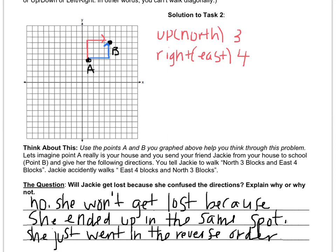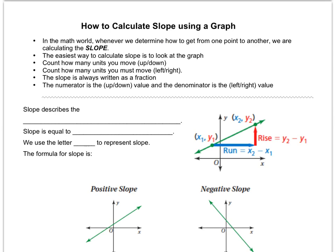And let's look at how that introduces our concept of slope. How to calculate slope using a graph. Read along with me. In the math world, whenever we determine how to get from one point to another, we are calculating slope. The easiest way to calculate slope is to look at the graph. Count how many units you move up or down. Count how many units you move left or right. The slope is always a fraction. And the numerator is the up-down value. And the denominator is the left-right value.